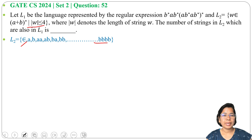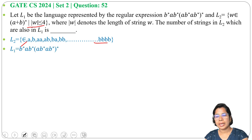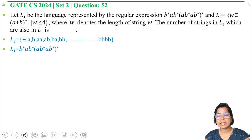For L1, the regular expression is B-Kleene-closure (AB-Kleene-closure AB-Kleene-closure) whole Kleene closure. Here the minimum string accepted by L1 is A. Now we need to find which strings of L2 are also in L1, so we will check length by length.